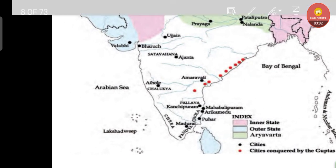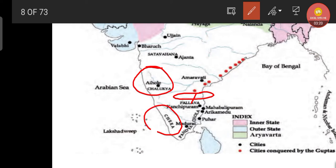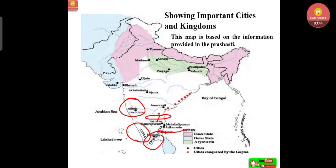Aihole is marked on the map — Aihole is a very important site. We will look at questions related to Aihole. The Chalukyas' area is shown, then the Pallavas, and Kanchipuram. The three important dynasties in southern India are the Chalukyas, Cheras, and Pallavas; the Pandyas are also very important. Madurai, Puhar, Arikamedu — which we learned about in previous classes — and Mahabalipuram are all important places to remember.